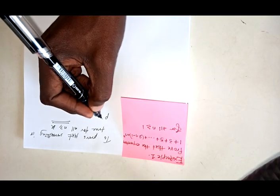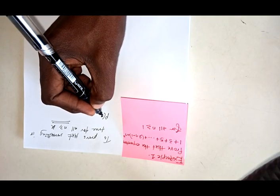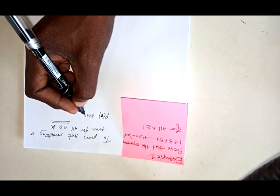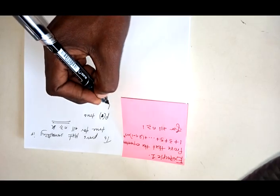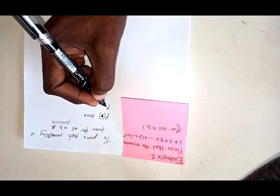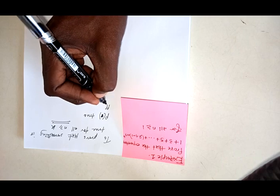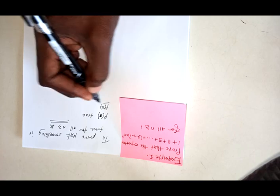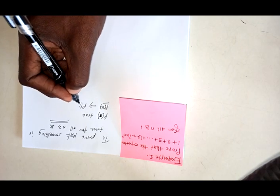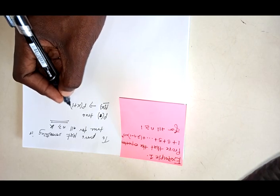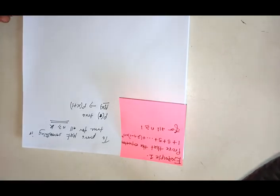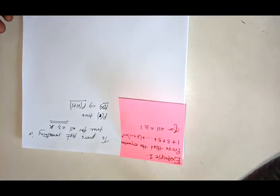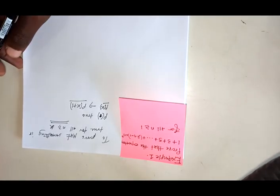Under mathematical induction we begin with P(1), that is for the value of n equal to 1, and then we prove that it is true. Then we come up with a proposition: for any value — say k — if this is true, then it should imply that it is also true for values greater than k, whenever the new value of k is bigger.